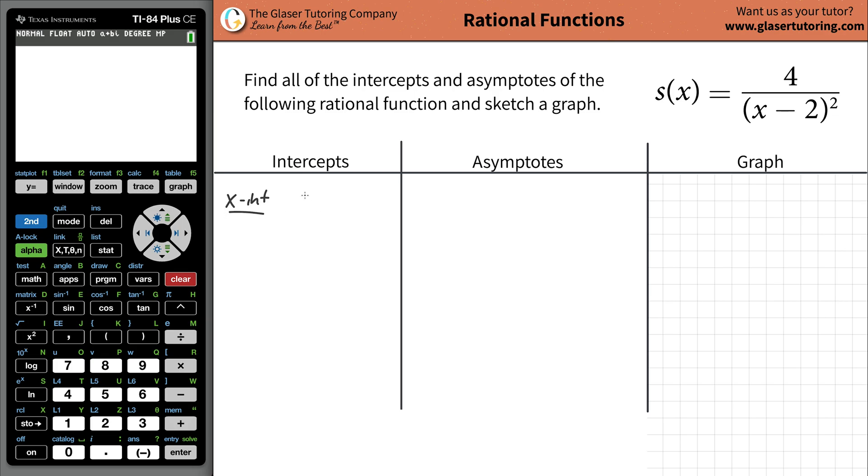When you want to find the x-intercept, what you want to do is set your y value or the function's value equal to zero. So let's write this out: y equals 4 divided by (x minus 2) squared. And you're going to set y equal to zero, plug it in as zero, and solve this for x.